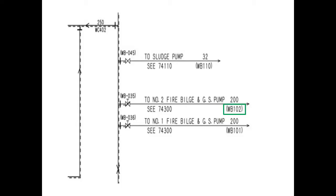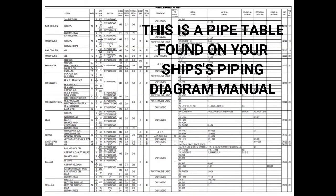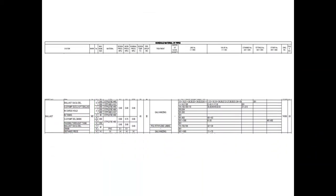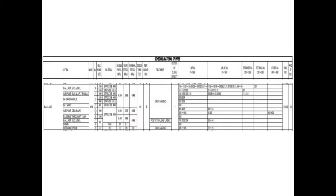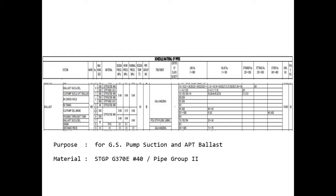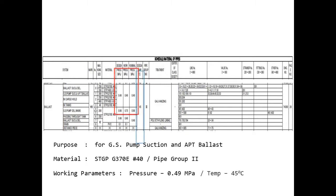WB 102 means a whole lot of things. The WB means that this pipe is part of the ballast system. 1010 is the pipe number, identifying that it is intended for GS pump suction and after-peak ballast. Here we can see that the pipes under this category are STP G370, number 40. Aside from that, the design and working pressures are at 0.49 MPa, marked as 5K on flanges and valves, and the design temperature is 45 degrees.